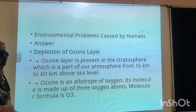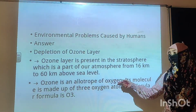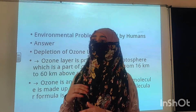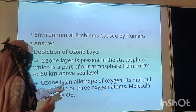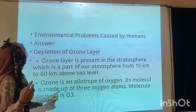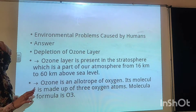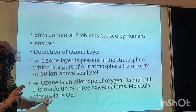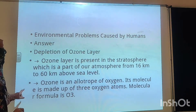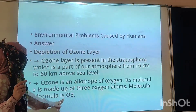Ozone is an allotrope of oxygen. An allotrope means the same element existing in two or more forms. Ozone's molecule is made up of three oxygen atoms, and its molecular formula is O3. So ozone is an allotrope of oxygen, its molecule is made up of 3 oxygen atoms, and its formula is O3.